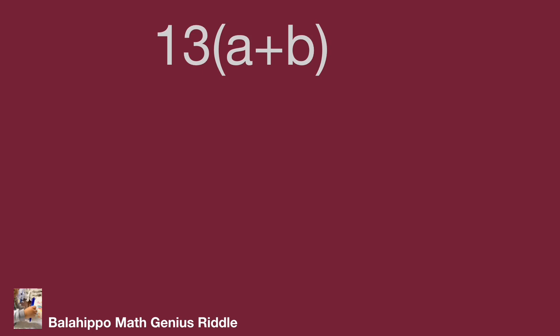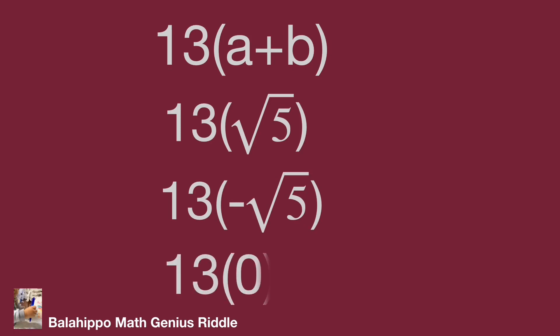Then the value of thirteen times bracket a plus b bracket. We can get the following value group as thirteen times square root five, thirteen times negative square root five, and thirteen times zero equal to zero. That's the value we get.